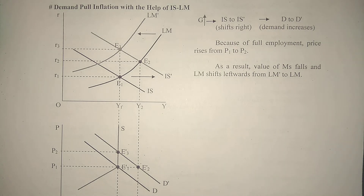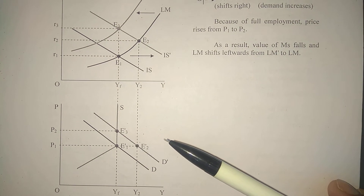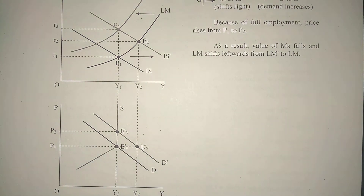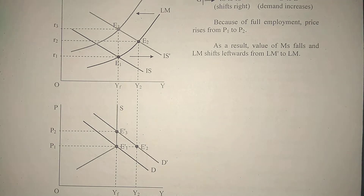This is the diagrammatic presentation of demand pull inflation with the help of IS-LM. There are two diagrams — you can say this is one diagram with an upper panel and a lower panel. We will discuss step by step how to draw this diagram. The two diagrams are one on top and one on the bottom.